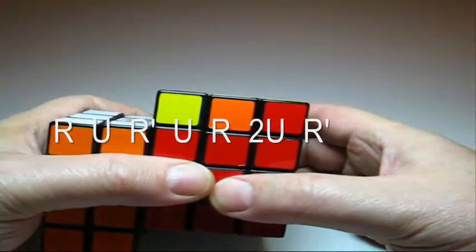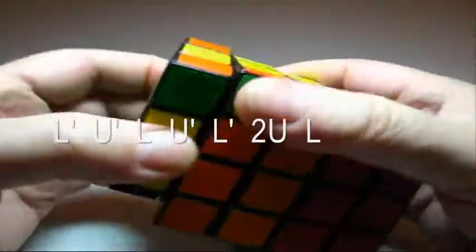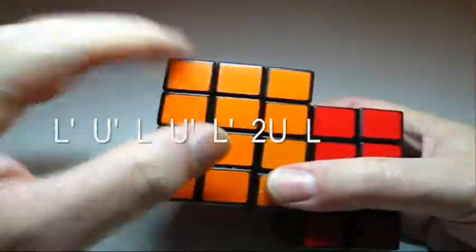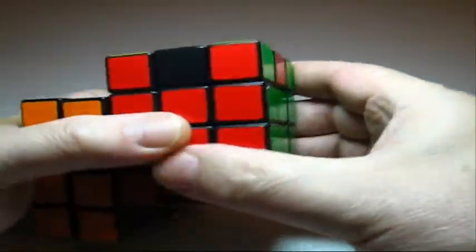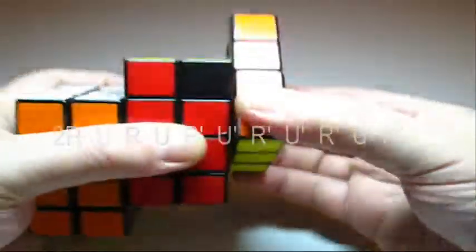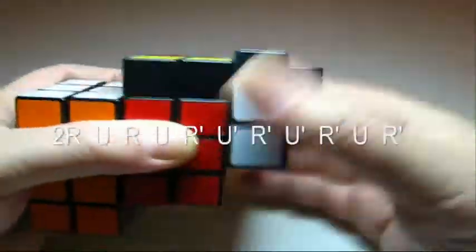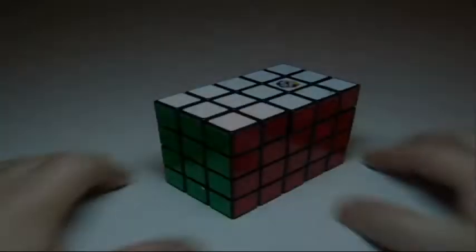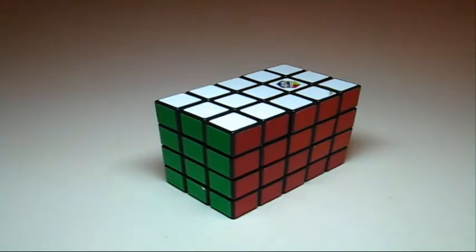So you do the proper algorithm to get to the fish. Same situation, it's on the left, so you turn it around and you do the left one. Now this one is done and those three are not done, so you do the algorithm. And voila, your three by four by five is back together. I hope it helps. Good night.